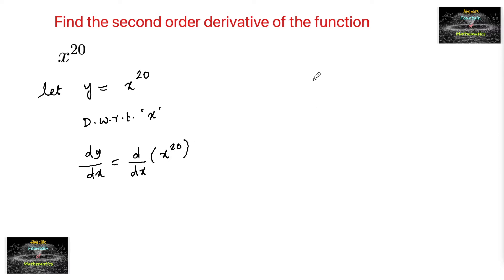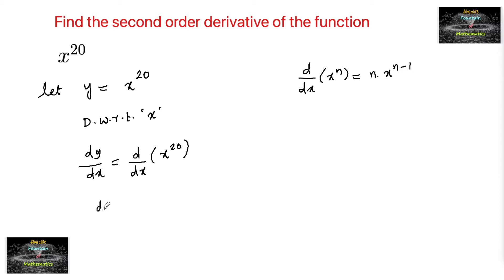Since we know the differentiation formula d by dx of x to the power of n is equal to n into x to the power of n minus 1, we can write dy by dx is equal to 20 times x to the power of 20 minus 1, that is 19.